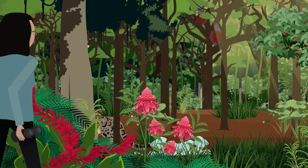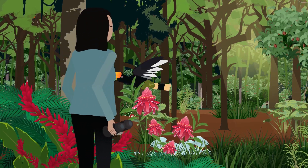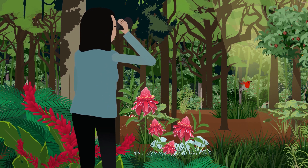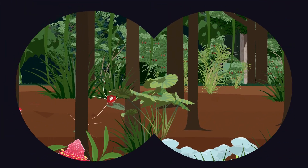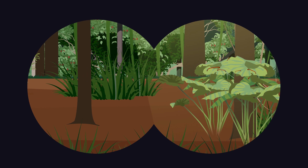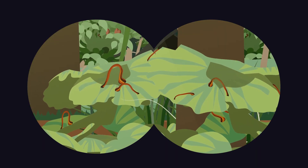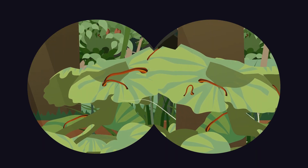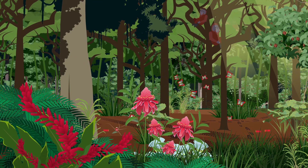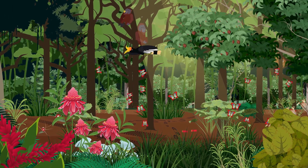Animals are essential for forest health, but can be difficult to spot. In Southeast Asia, leeches are a good indicator of the presence of mammals in high quality forest. Signs of hunting could indicate key mammals are missing from the forest.